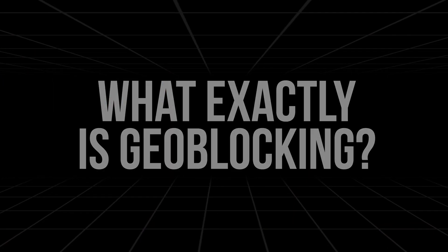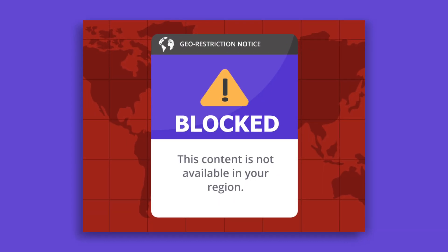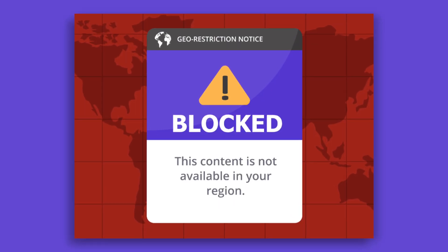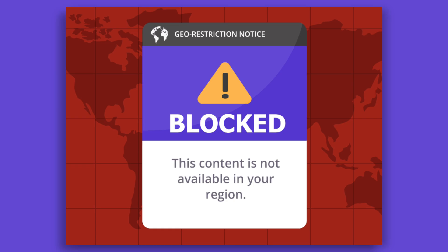What exactly is geoblocking? In simple terms, geoblocking is a way for websites and online services to restrict access to certain content based on your location. If you've ever tried to stream a show on Netflix only to be told that it's not available in your region, that's geoblocking in action. It's essentially an invisible barrier that keeps you from seeing content that companies have only licensed for certain areas of the world.